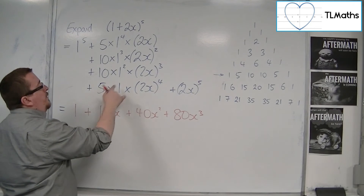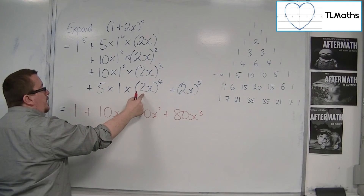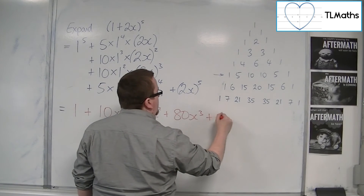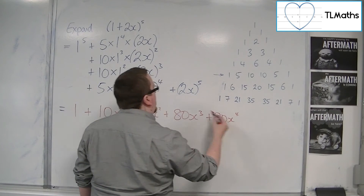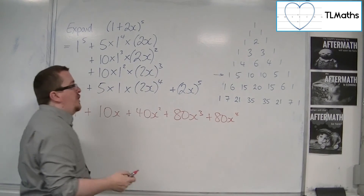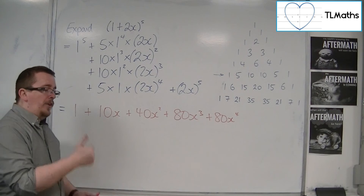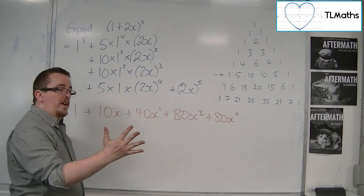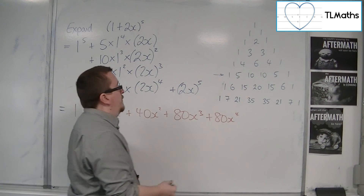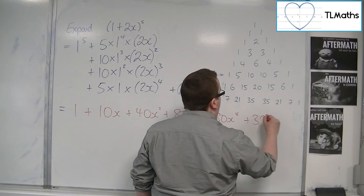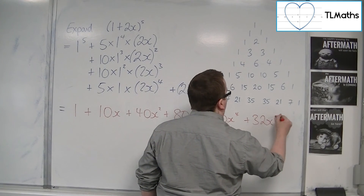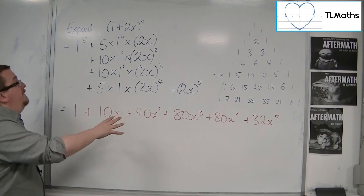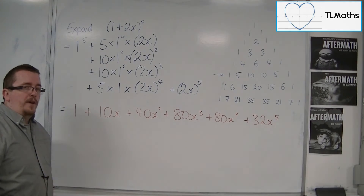5 times 16 is 80, so 80x to the 4. And then finally 2 to the 5 — 2, 4, 8, 16, 32 — so 32x to the 5. And that is the fully expanded form of 1 plus 2x to the 5.